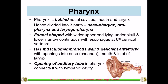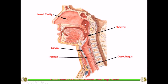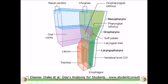The opening of the auditory tube in the pharynx connects it with the tympanic cavity. The auditory tube, also called the Eustachian tube, connects the pharynx with the ear. Anteriorly, the pharynx is deficient because of the openings of the oral cavity, nasal cavity, and the larynx, and below it continues as the esophagus.